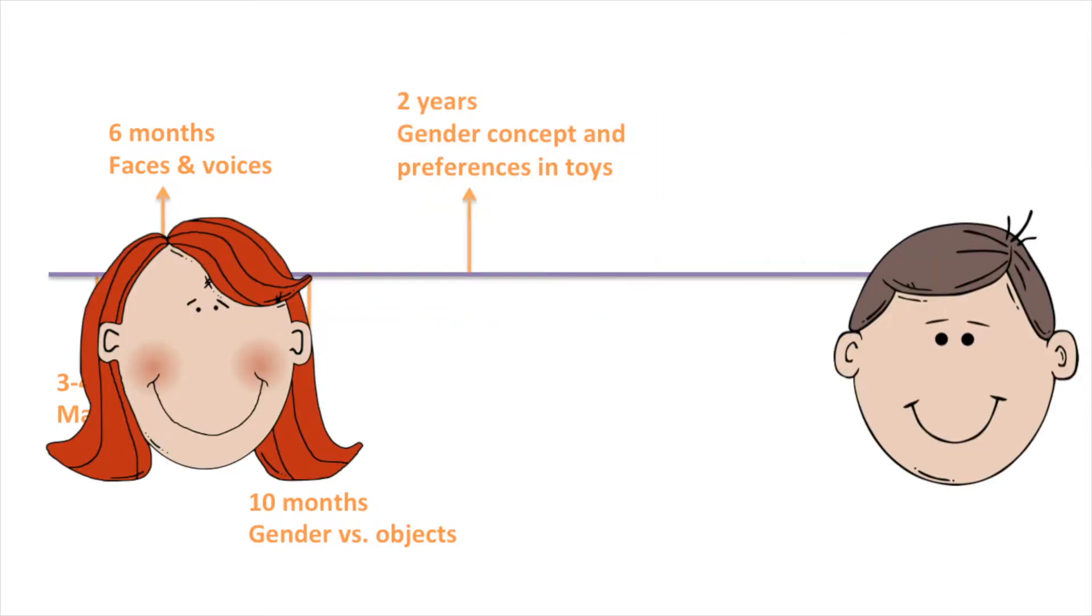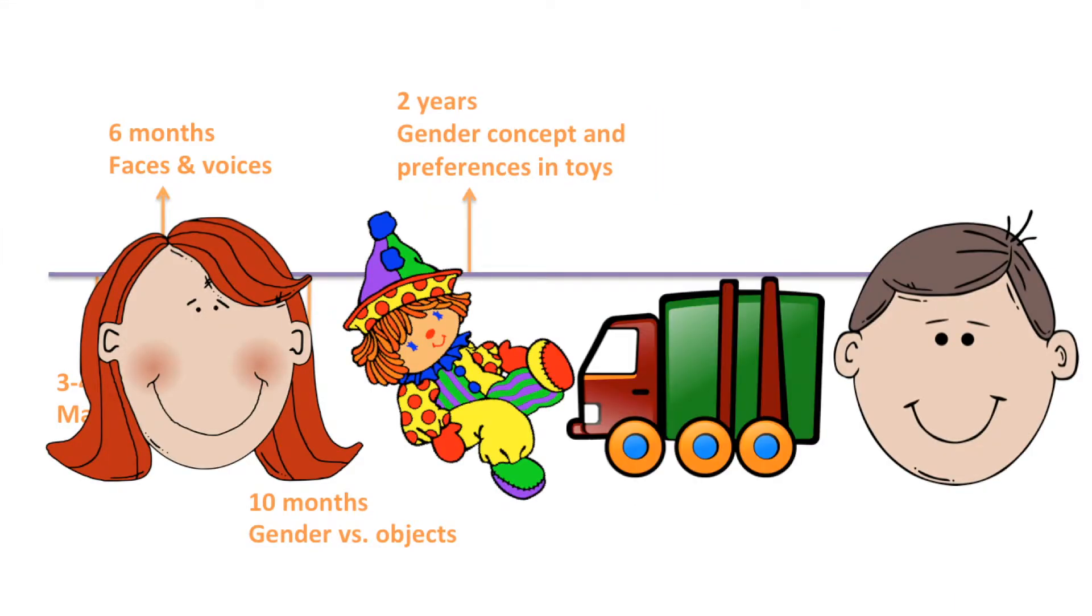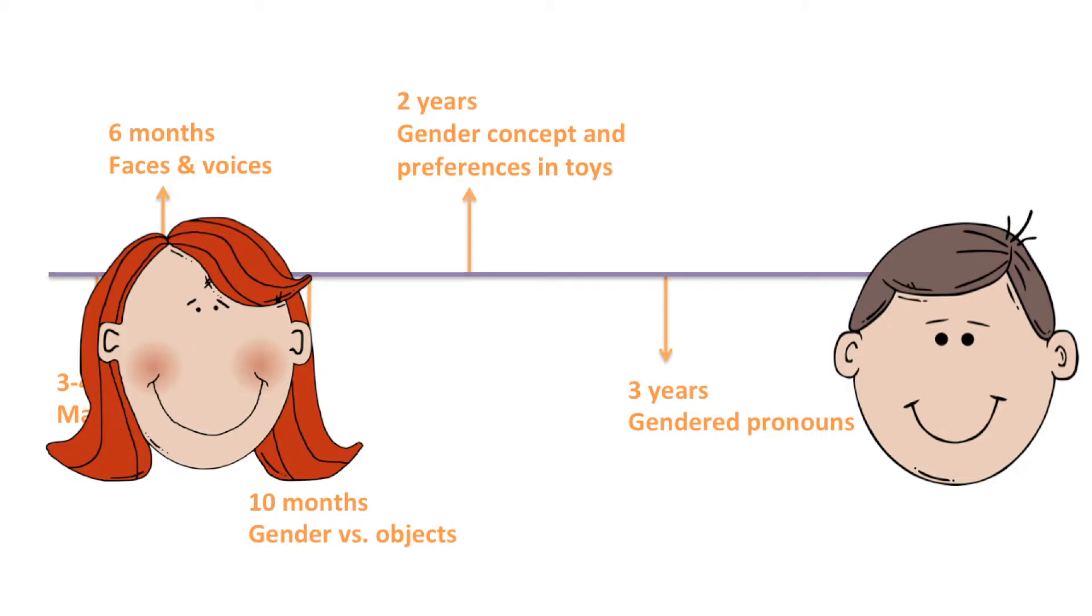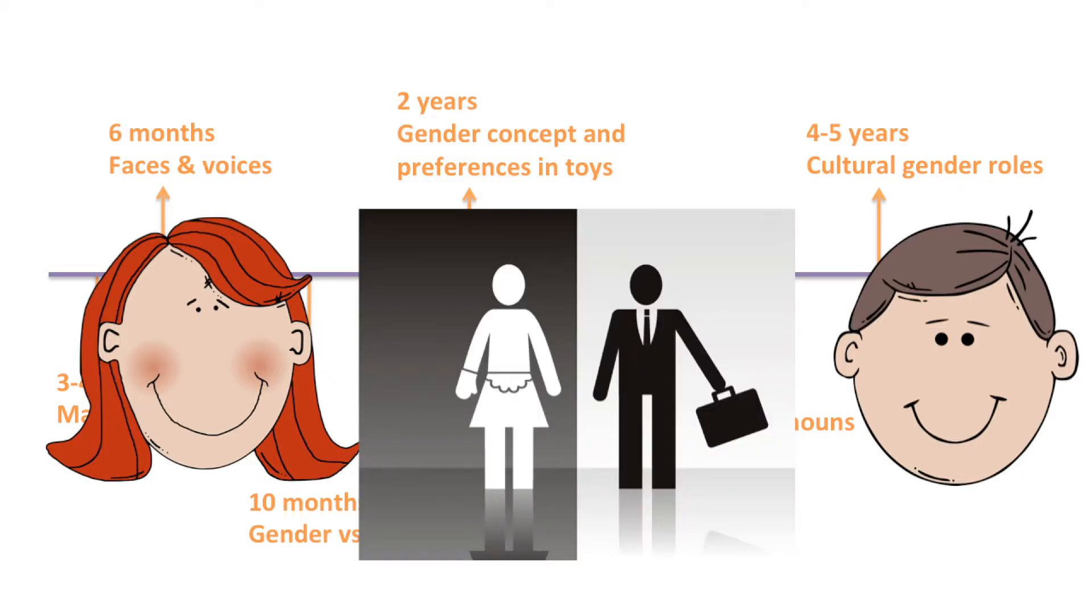By age two, children start to know the concept of gender and show gender-related preferences in toys. By age three, they start to use gender pronouns such as him or her. By age four and five, they start to learn more abstract cultural beliefs about gender role concepts.